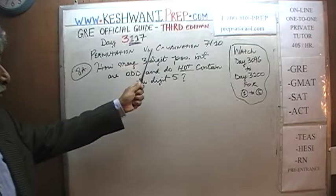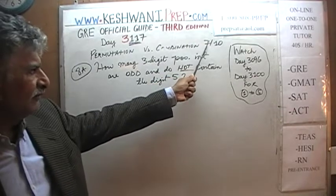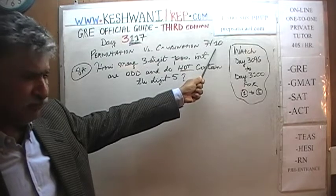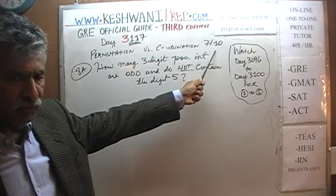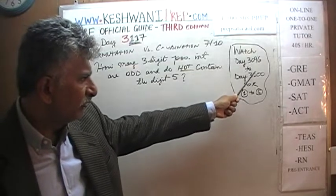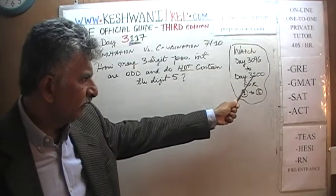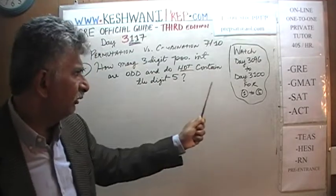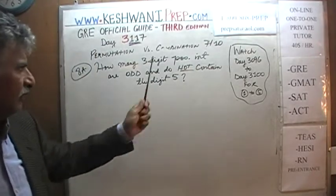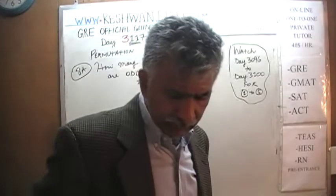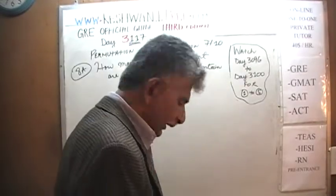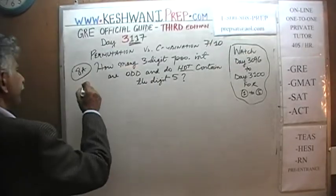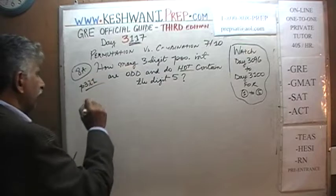We are on the topic of permutations versus combinations. Today is our seventh video in the series of ten. If you are interested in watching the first five, I did it in two separate parts. The first five are from day number 3096 to 3100. Yesterday we did the sixth video and today is the seventh one. We will do problem number 8, which appears under data analysis exercises on page number 321.